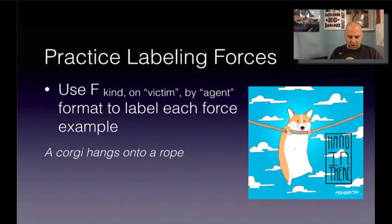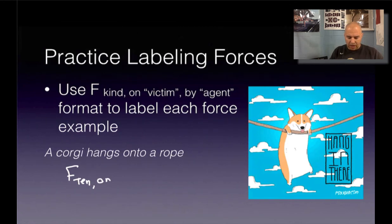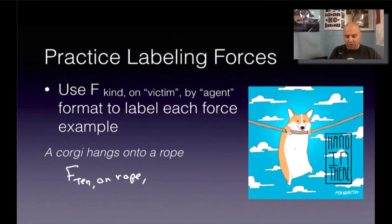Next one: a corgi hangs onto a rope. That force is a tension force. The force is happening on the rope, and the reason it is happening is because the corgi is there — so it's the tension force on the rope by the corgi.